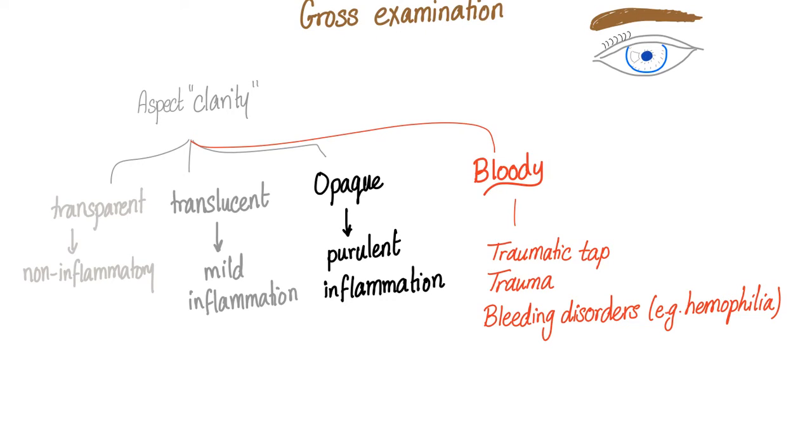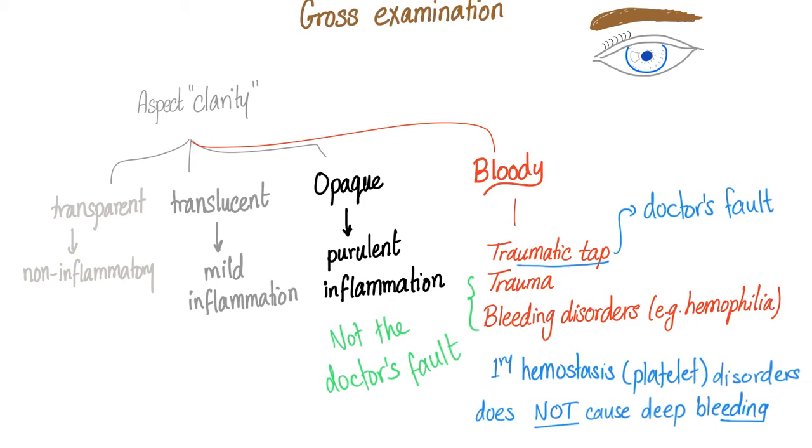So when you examine the joint fluid by your eye, the aspect or the clarity, it should be transparent. That's normal. If it's mild inflammation, translucent, which is different from transparent. Opaque, purulent. This is inflammation. This is septic arthritis. Bloody in case of traumatic tap, trauma, bleeding disorders such as hemophilia. Bleeding into big joint is a sign of the secondary hemostasis problem because this is a deep bleeding. There is a problem in the coagulation factors, not the platelets.